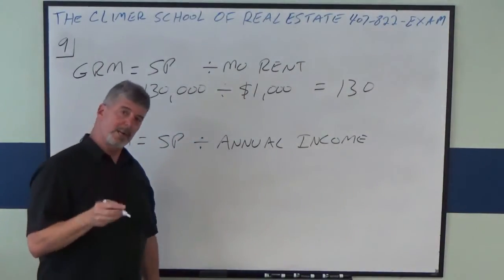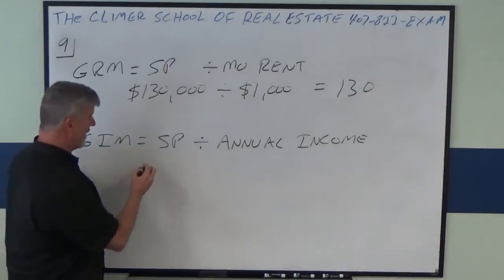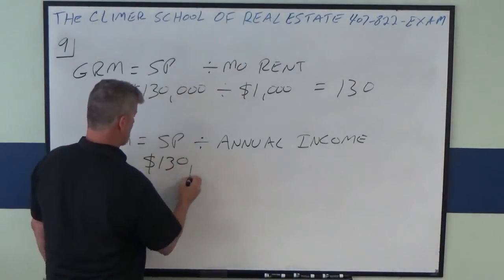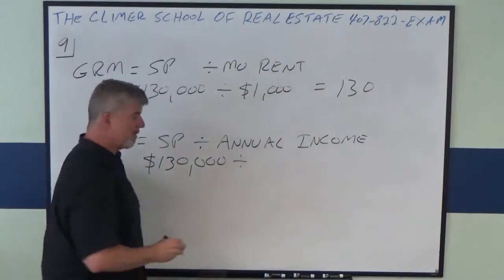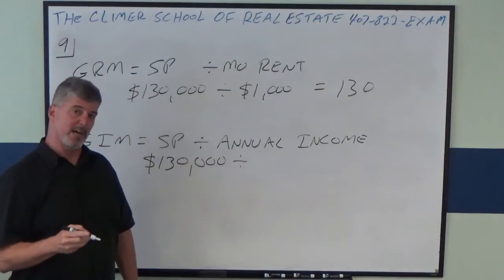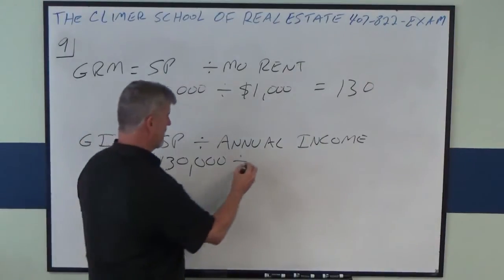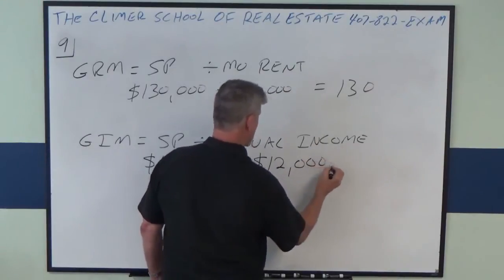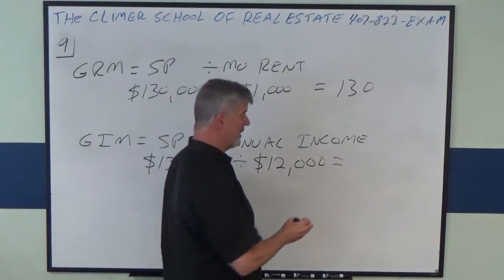If the same problem asks you for GIM, you take the sales price of $130,000 divided by the annual income, which is $12,000, or $1,000 times 12. And the GIM would be 10.83.